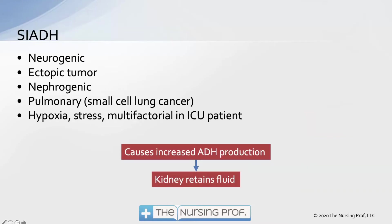The other side of the coin is SIADH. SIADH can be caused by neurogenic factors, where ADH from the brain is inappropriately released in excess. It could be an ectopic tumor on the kidney releasing too much antidiuretic hormone. It could be nephrogenic or pulmonary. Small cell lung cancers are associated with pulmonary SIADH, as is mechanical ventilation — especially patients on high volumes and pressures. Hypoxia, stress, and multifactorial events in ICU patients can also contribute.